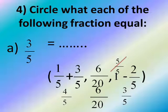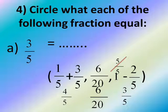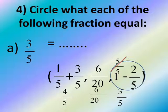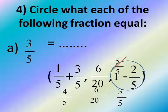Now solve the multiple choice. First: 1 over 5 plus 3 over 5 — 1 plus 3 equals 4, so 4 over 5. Number 2: 6 over 20, leave it as is. Number 3: 1 minus 2 over 5 — convert 1 to 5 over 5 since the denominator is 5. Then 5 over 5 minus 2 over 5 — 5 minus 2 equals 3, so the answer is 3 over 5. The result is number 3.